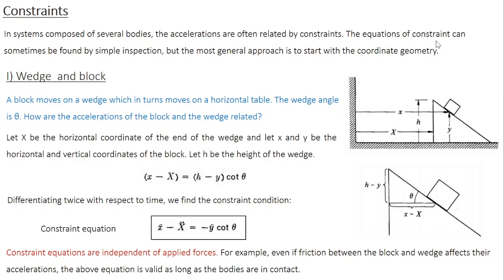The equations of constraint can sometimes be found by simple inspection, like the train case. But the most general approach is to start with the coordinate geometry. Let's first consider the example of a wedge and a block. A wedge is like an inclined surface — a block moves on the wedge, which in turn moves on a horizontal table. The wedge angle is theta. The question is: how are the accelerations of the block and the wedge related?